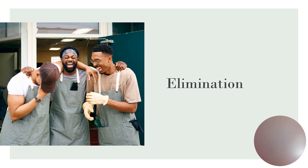Elimination is defined as the excretion of waste products from the body by the lungs, skin, gastrointestinal tract, and by the kidneys. Urinary elimination occurs as a result of multiple kidney processes and ends with the passage of urine through the urinary tract. When the urge to void occurs, urine will be passed from the bladder through the urinary sphincter, urethra, and meatus.